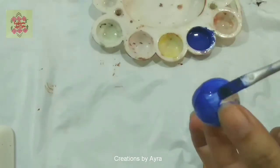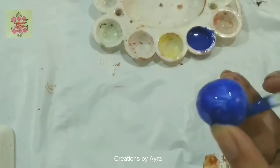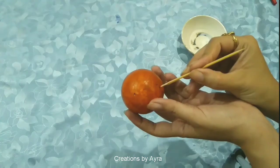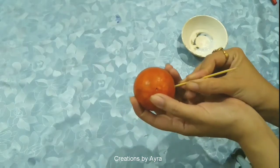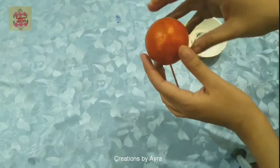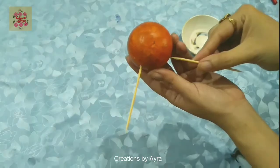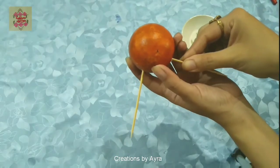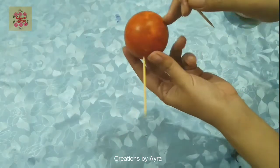Let it dry and then apply the second coat. Now I'm taking this barbecue stick. I have made both ends pointed and I have applied glue on the tip of these barbecue sticks.